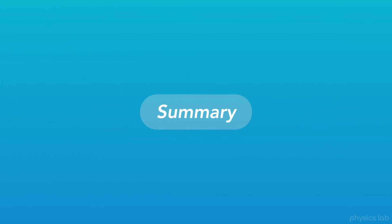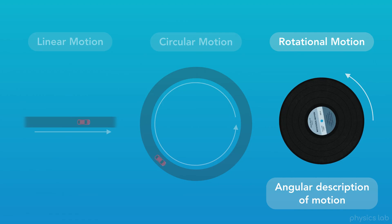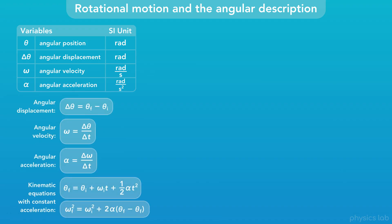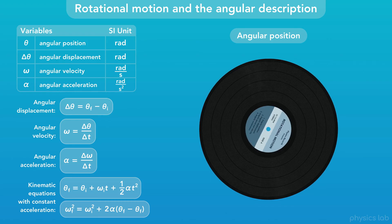So that's everything we're going to cover. This lesson specifically focused on objects in rotational motion and how to use the angular description of motion. These are the variables we learned and their SI units. Here are the equations we covered: the first three are the definitions of angular displacement, velocity, and acceleration. The last two are the kinematic equations for an object with constant angular acceleration. All of these are the same as from linear motion and circular motion, but use the variables for the angular description. When an object rotates, every point on the object rotates together, and we can draw a line on the object to help us see how it's moving.